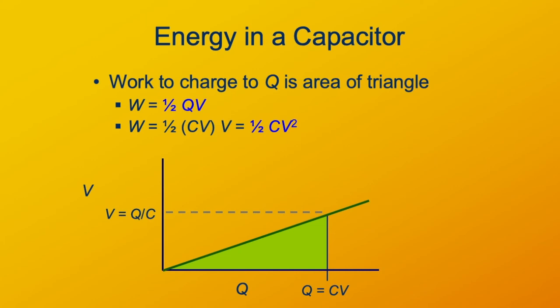Or alternatively, we might know Q and not the voltage. For instance, if we know the capacitance, we want to know what charge is stored on it if we know how much energy is in the capacitor. Now here we're using Q instead of C and we get one half Q squared over C.